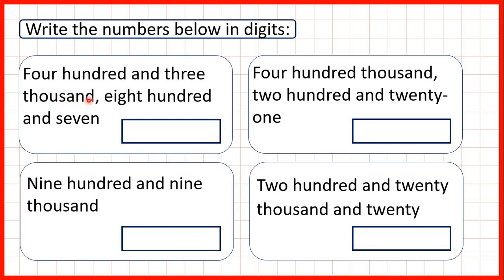We write the number 403 and then a comma, because we have a comma to separate our thousands digit from our hundreds. Then we read the rest of the number after the word thousand. We have 807, so we write 807 after the comma.